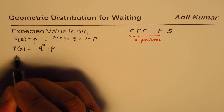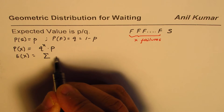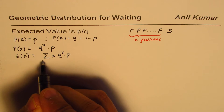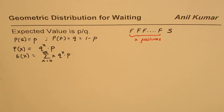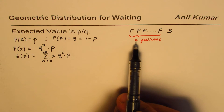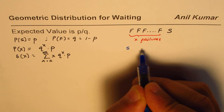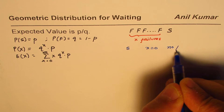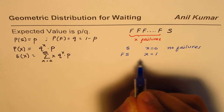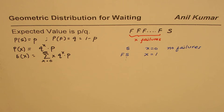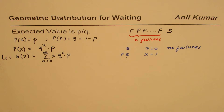Now what is the expected value? It is the sum of X times the probability, where X runs from 0 to infinity, because there could be no failure — we can get success on the very first trial. So X can take values from 0 to infinity. For example, X equals 0 means no failures, or X equals 1 means one failure followed by a success. We want to find mu, the mean number of failures.